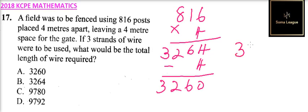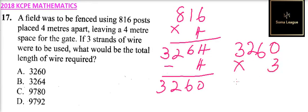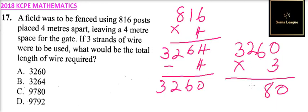Because 3 strands of wire are used, we multiply 3260 by 3. That is for 1 strand, so we multiply by 3. When you multiply: 0 times 3 is 0; 6 times 3 is 18, carry 1; 2 times 3 is 6, add 1, you get 7; 3 times 3 you get 9. So the total length of wire is 9780 meters.